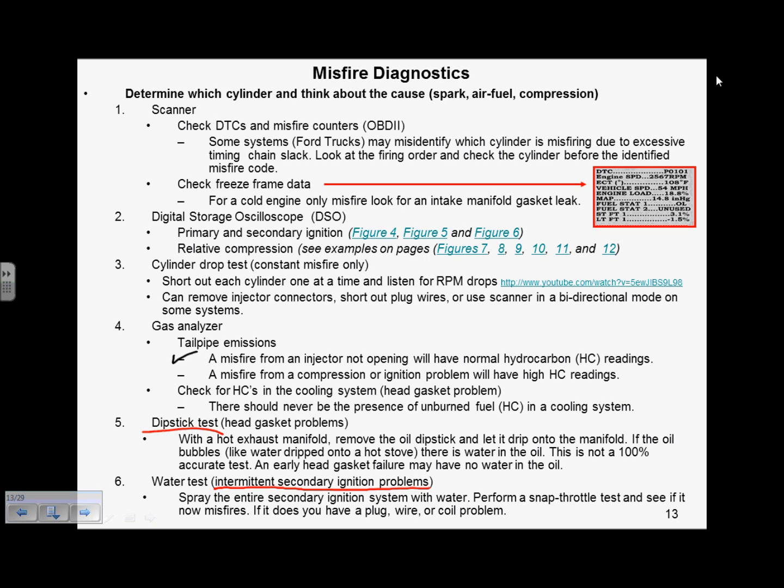What are the tailpipe emissions? If the HCs are very high, that doesn't tell you if it's compression or ignition or where that ignition problem is, it only says that injector's functioning, I'm going to go towards compression and ignition next. And believe it or not, with this tailpipe test, you can actually use your nose as an input to the direction you're going.